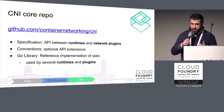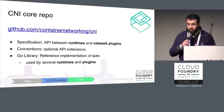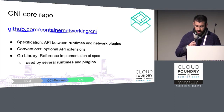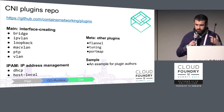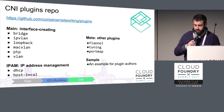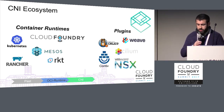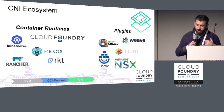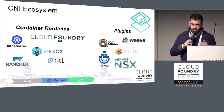The core CNI repo specifies the API boundary for runtimes and plugins, has conventions for optional advanced features, and includes a Go language library making it easy to implement a CNI plugin or write a runtime that consumes one. There's also a separate repo with reference implementations of network plugins for interface creation, IP address management, tuning, and a new port mapping plugin. There's a growing ecosystem: Cloud Foundry and Kubernetes are using CNI as container runtimes, and on the other side of the API boundary you have both open source and proprietary plugins that tie into various software-defined networking systems.